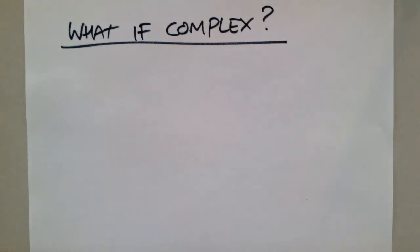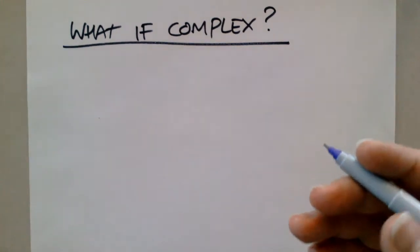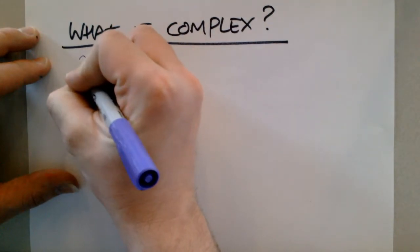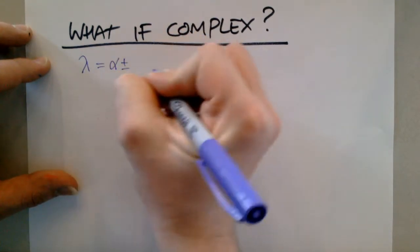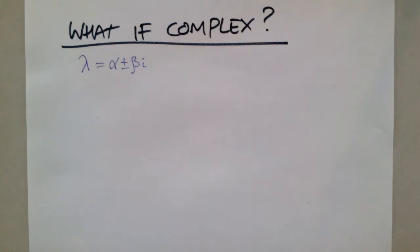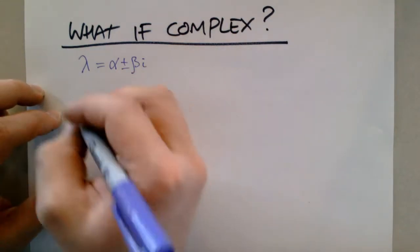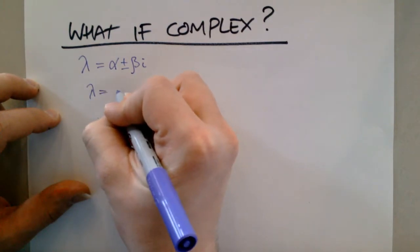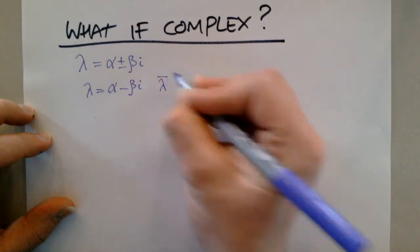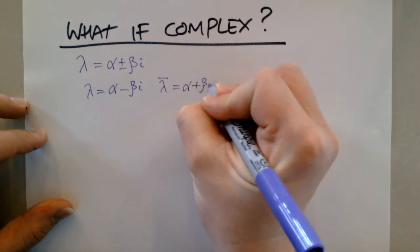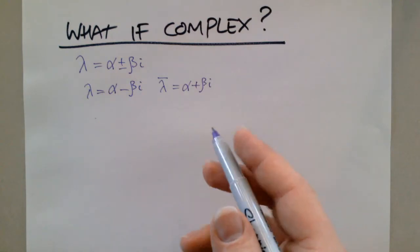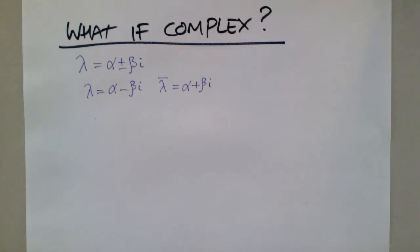Moving on to the new topic: what if we have a complex eigenvalue? As a reminder, a complex number has the form alpha plus or minus beta times i, where i is the imaginary square root of negative one. You'll often see lambda written as alpha minus beta i, with the complex conjugate lambda-bar equal to alpha plus beta i. Once you have that imaginary component, you have to deal with it in your eigenvectors and thus your solutions.